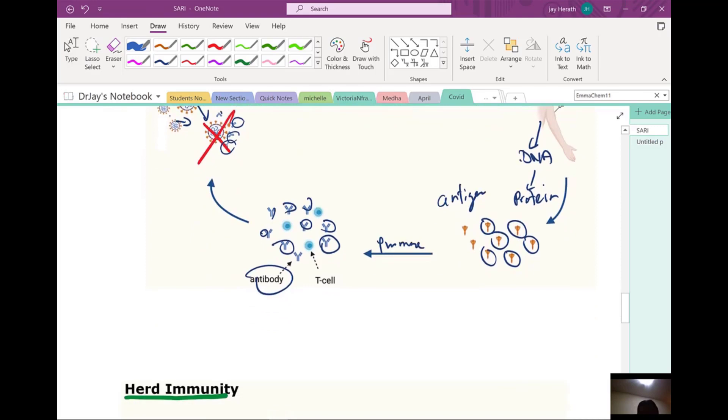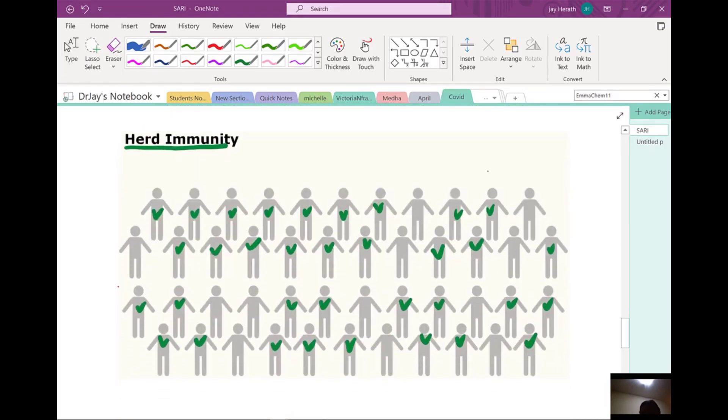There was another question asked about what is herd immunity. This is a big population, let's say in a country. If we vaccinate 65 to 70% of the population, all these people are vaccinated, majority, then we have the herd immunity. If we do have the herd immunity, this is what can happen. Let's say the virus can hide and stay somewhere other parts of the world. This person travels and gets infected. What happens is only this person will get infected. It will not go to this person, this person, this person, and this person. We are mostly protected.